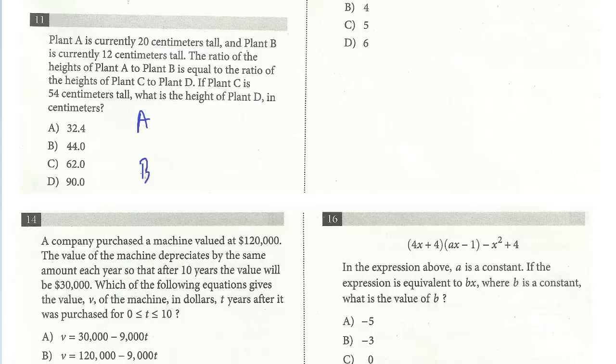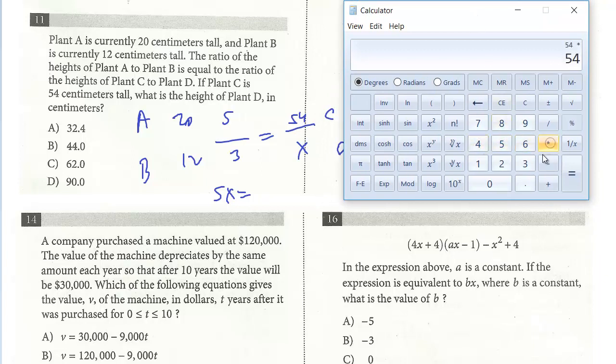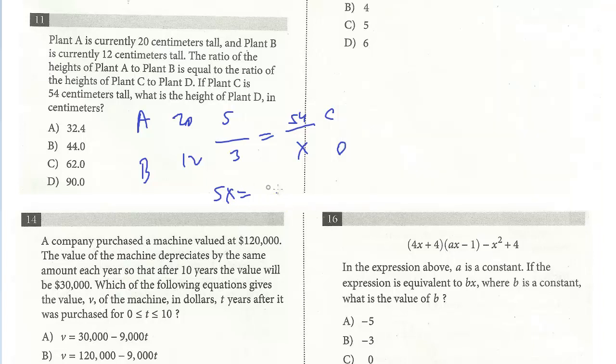The ratio A to B we have 20 to 12. We could divide each side by 4 and that would be 5 to 3. This is the ratio of A to B. We're told that's the same ratio as C to D. So C to D, we're going to line them up. C is the same as A, the bigger one, so this is 54. We could cross multiply, so 5x. Using the calculator, 54 times 3 and then divide by 5. This would be 162 divided by 5, which is 32.4. The answer is A.